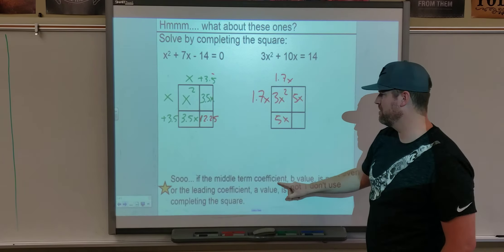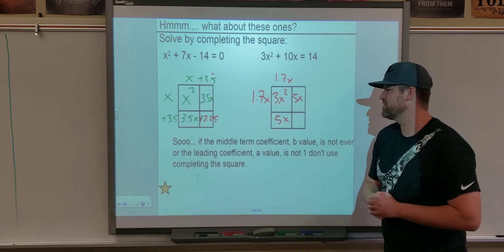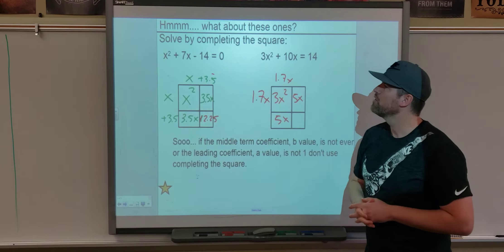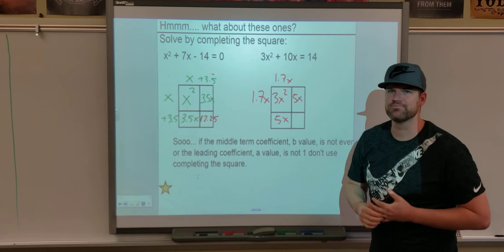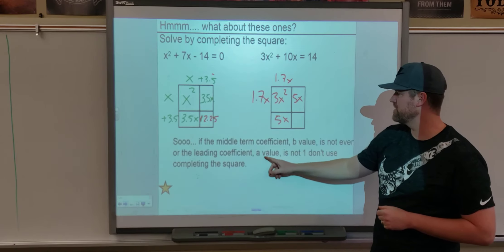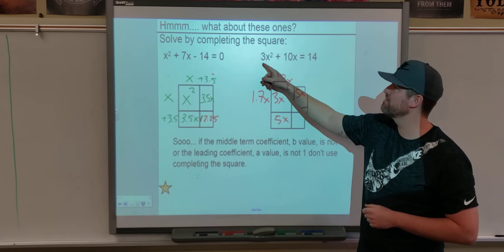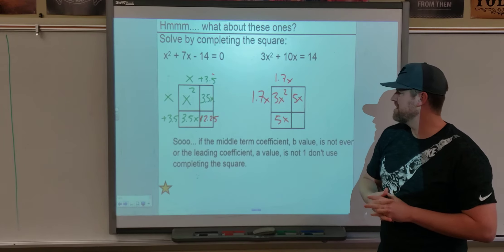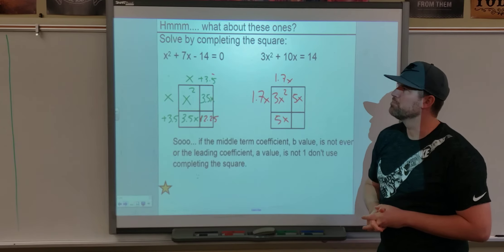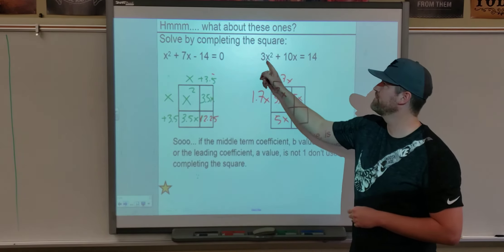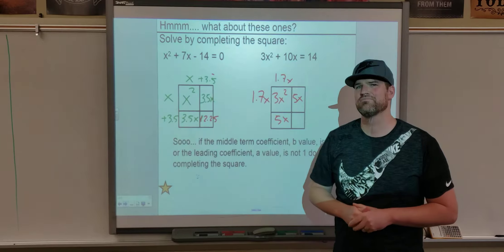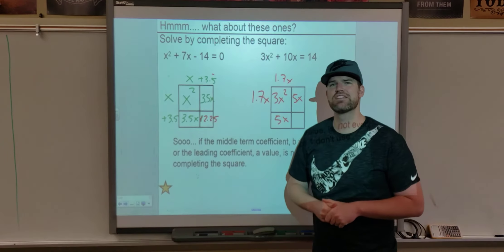So, if my magic trick works, here we go. So, if the middle term coefficient, or b value, is an odd number, or not an even number, we are not going to recommend completing the square. We're going to find a different way. Or, if the leading coefficient, or a value, leading coefficient, it's the first term, is not 1, we're going to recommend not using complete the square. So, again, completing the square, if your b is odd, or if your a is not 1, we could do it, but it gets a little bit messy. We'll let you do that in, like, pre-calculus or something. But for now, we're going to use a different method.